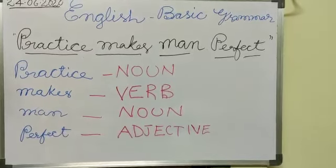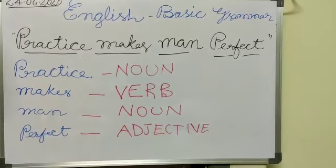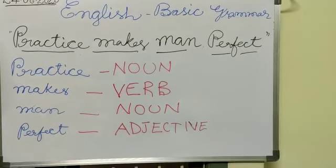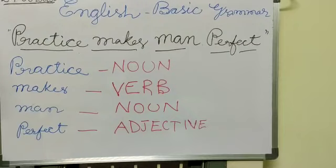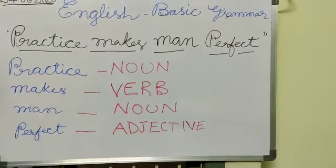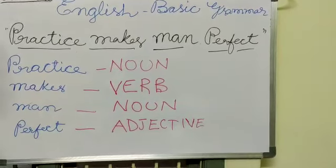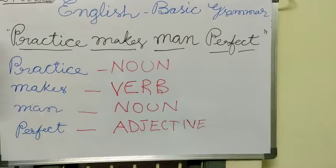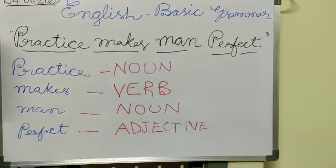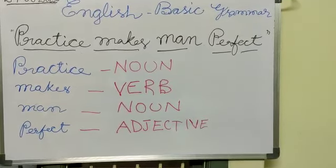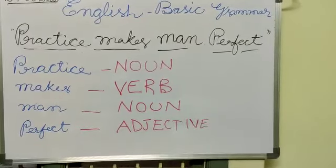Next, the last word: 'perfect.' If we look at parts of speech — in 'Practice makes man perfect' or 'He is a perfect man,' 'perfect' describes 'man.' An adjective describes a noun or a pronoun. It qualifies it. So 'perfect' is an adjective.